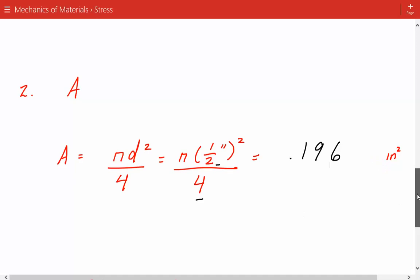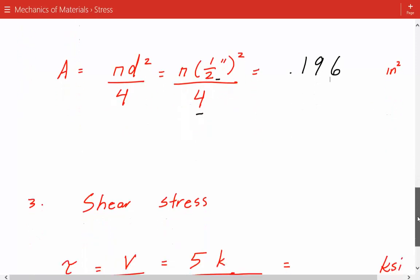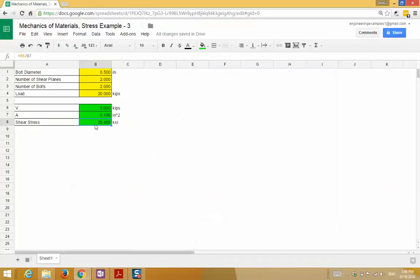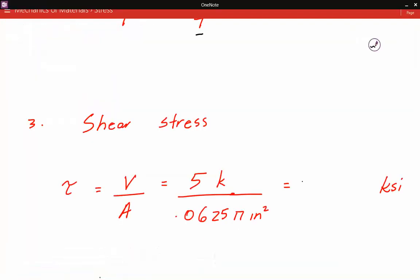Lastly, we can calculate the average shear stress acting on each bolt. That's simply equal to the shear force divided by the cross-sectional area, and that comes out to be 25.465 ksi.